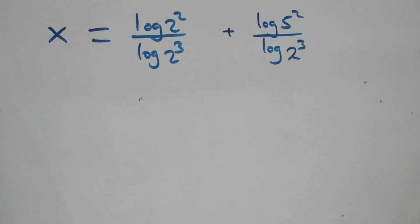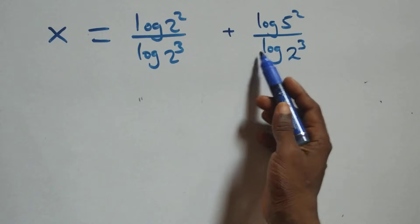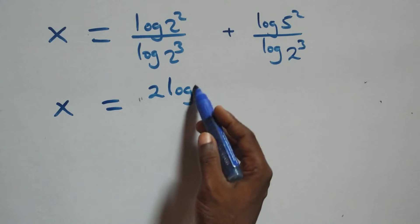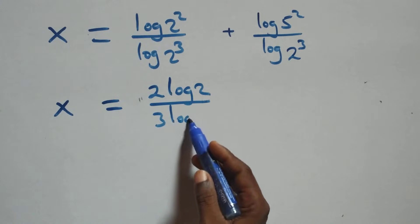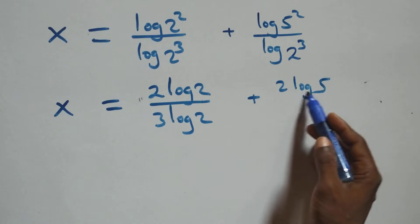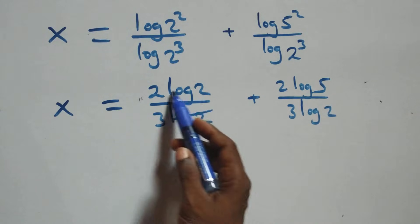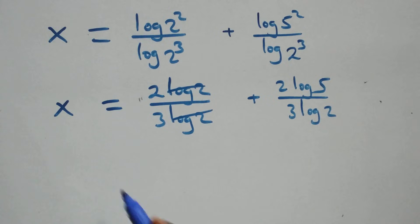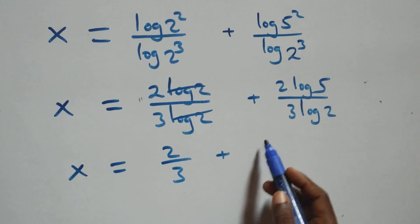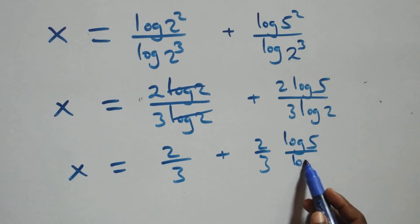Then in the next step we apply the power law of logarithms. The exponent 2 comes in front here, 3 comes in front here, 2 comes in front here, and 3 comes in front here. So we have x equals to 2 log 2 over 3 log 2 plus 2 log 5 over 3 log 2. Here, log 2 cancels, so we get x equals to 2 over 3 plus 2 over 3 times log 5 over log 2.